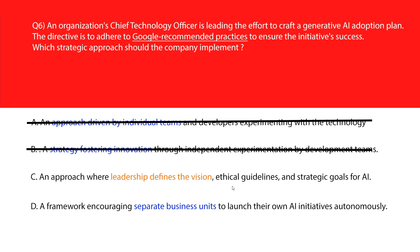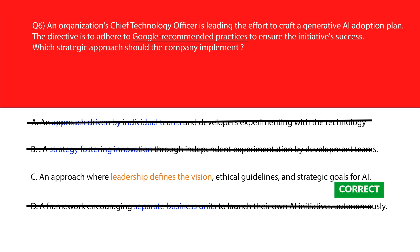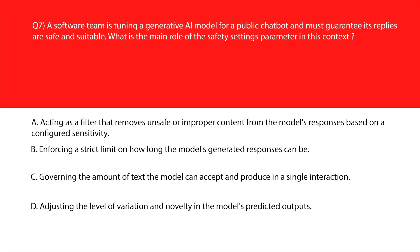Option C says an approach where leadership defines the vision, ethical guidelines, and strategic goals for AI. Google AI principles advocate for a top-down strategy to ensure responsible and aligned adoption — let's keep it. Option D says a framework encouraging separate business units to launch their own AI initiatives autonomously. This can lead to redundant projects, inconsistent security protocols, and a fragmented AI landscape — eliminate. We'll lock option C as the right answer.